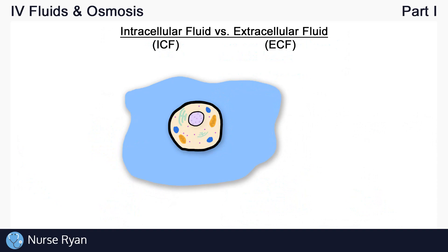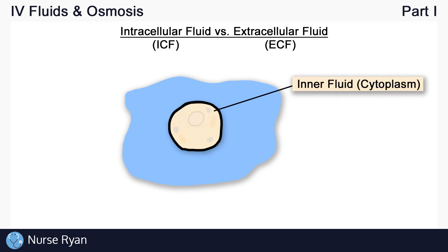So let's take a look at an individual cell in our body. What we have here is a single cell. On the inside of the cell, we have the nucleus and all the little organelles floating around in the cytoplasm. The cytoplasm is a fluid which is made up of mostly water and salts, like sodium and potassium. Water is represented by the blue dots here, and salt by the red dots.